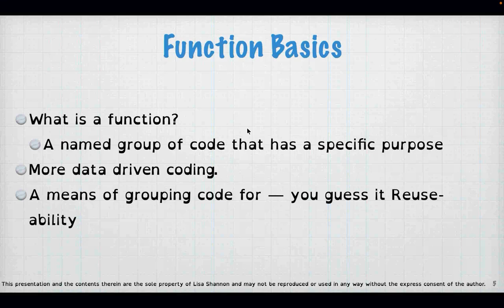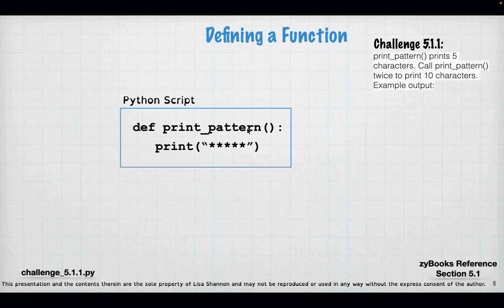A function is simply a named group of code that usually has a specific purpose. That purpose can be just about anything. For what we're doing and for what you're going to do in the project, the purpose is going to be something like moving between rooms. Basically it's a means of grouping code for reusability — you've got some kind of algorithm you've written and you want that algorithm to be able to be used anywhere you want, so you put it in a function and name it.